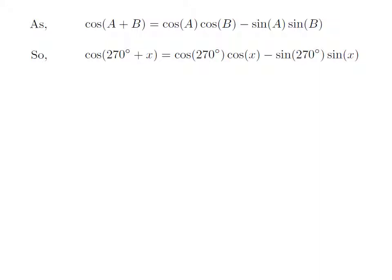So, cosine of 270 degrees plus x is equal to cosine of 270 degrees into cosine of x minus sine of 270 degrees into sine of x.